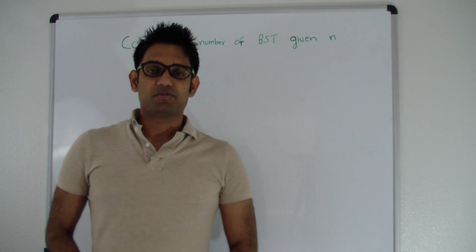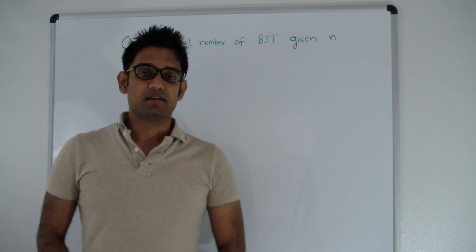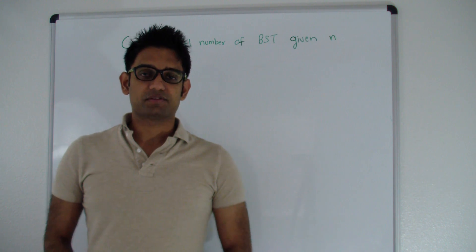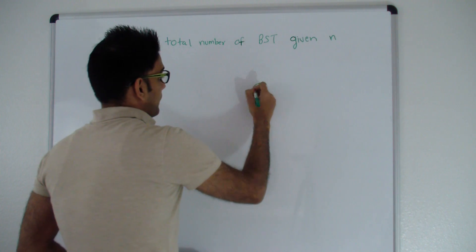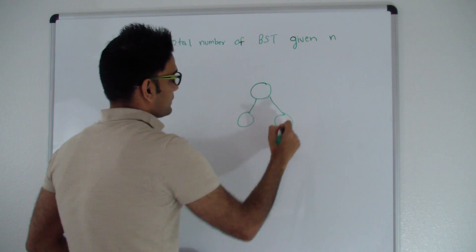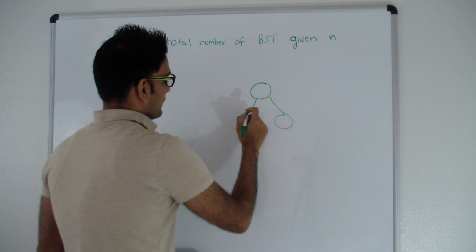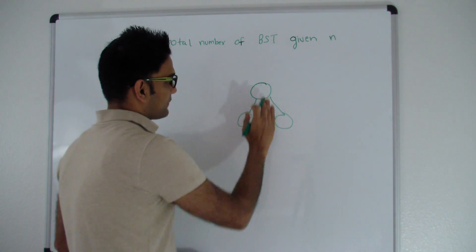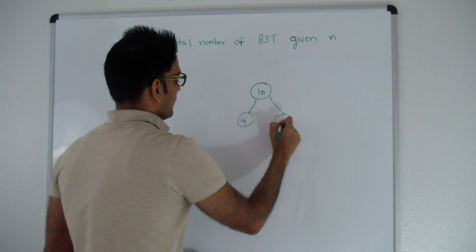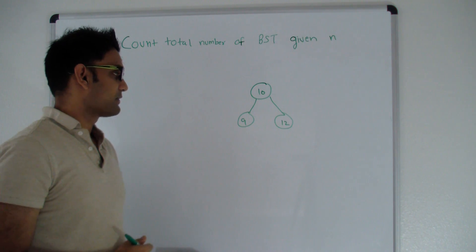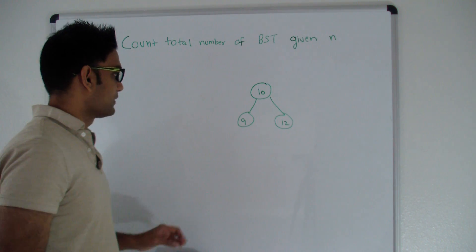Hello friends, my name is Tushar and today we are going to discuss the question: count the total number of binary search trees given n, where n is the number of keys in the binary search tree. A binary search tree is a tree where every node has two children, everything on the left side is less than the root, and everything on the right side is greater than the root. This is true for every node — for example, 10, 9, and 12 is a simple binary search tree.